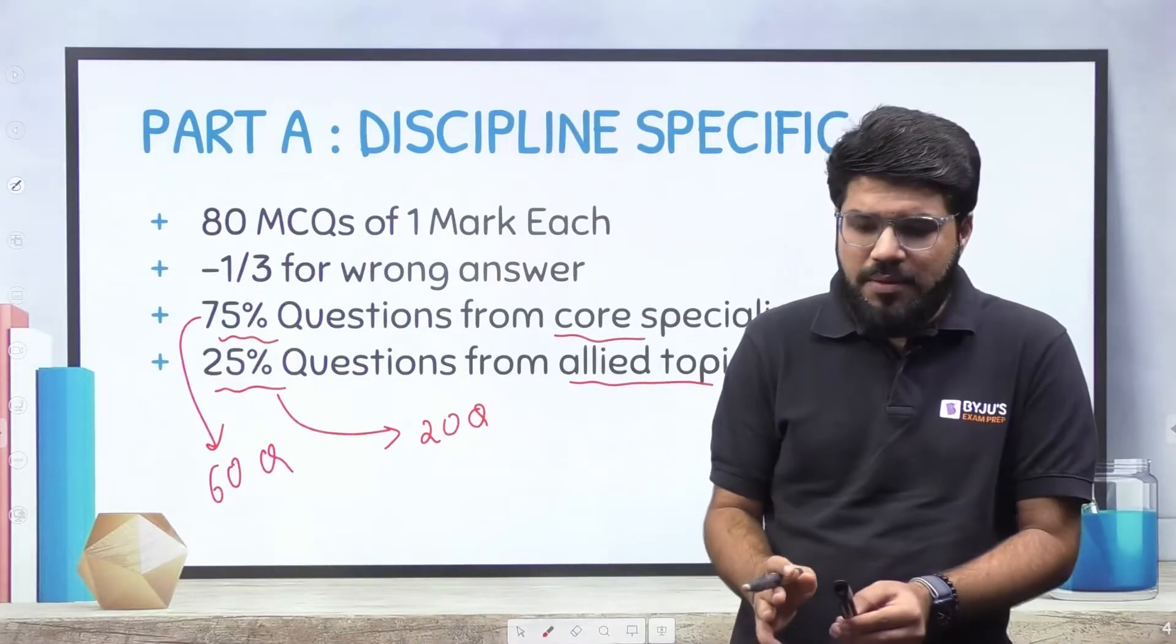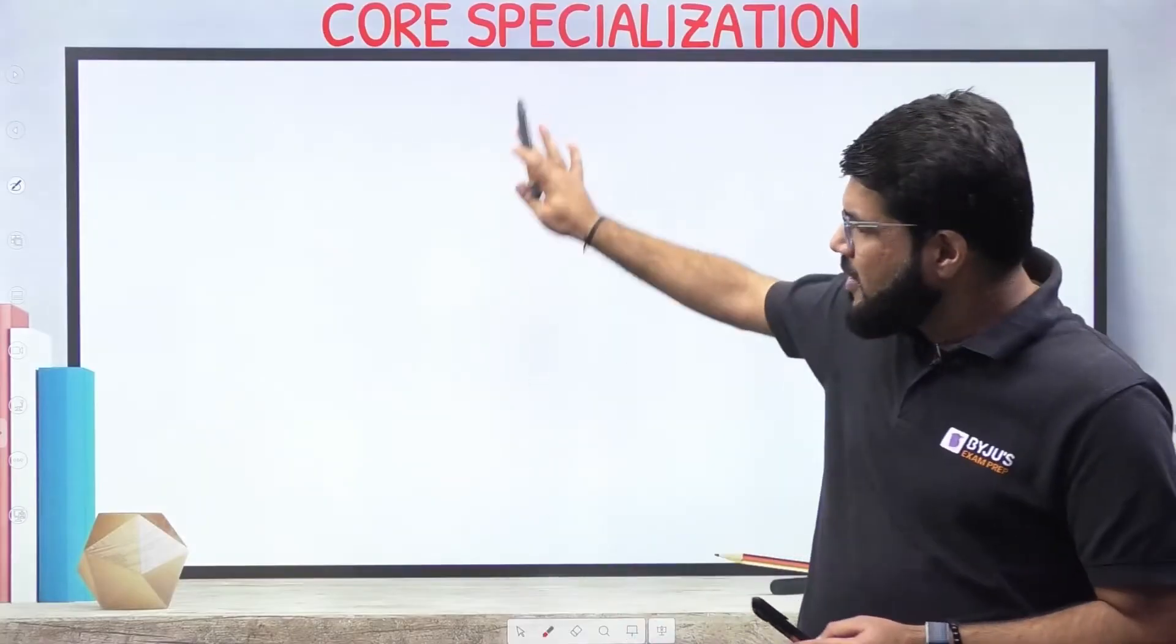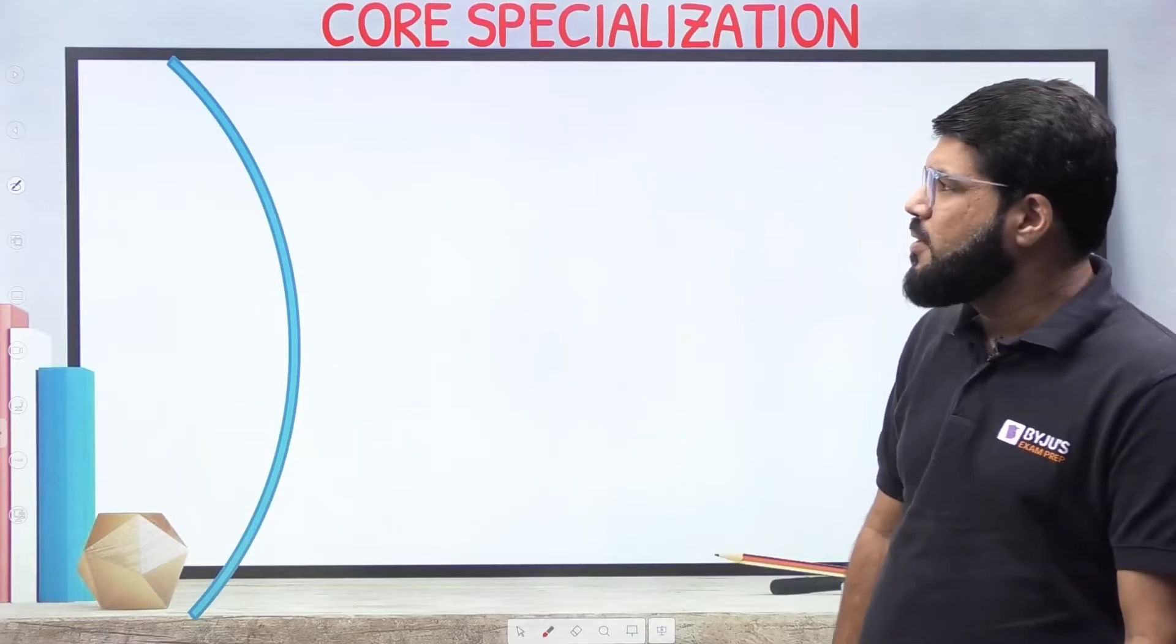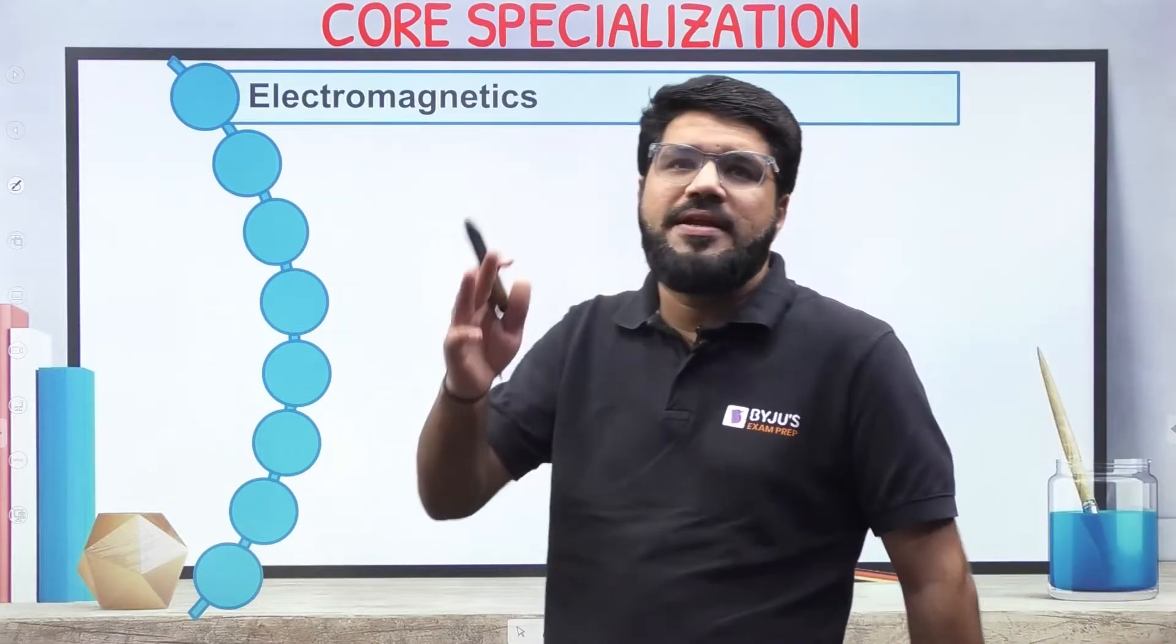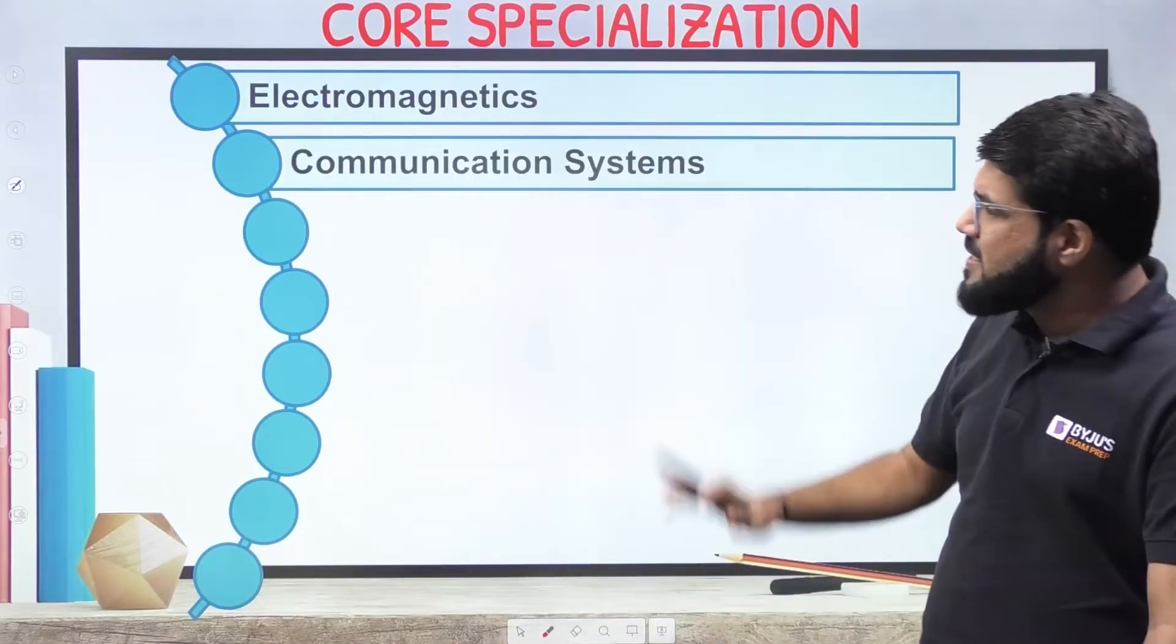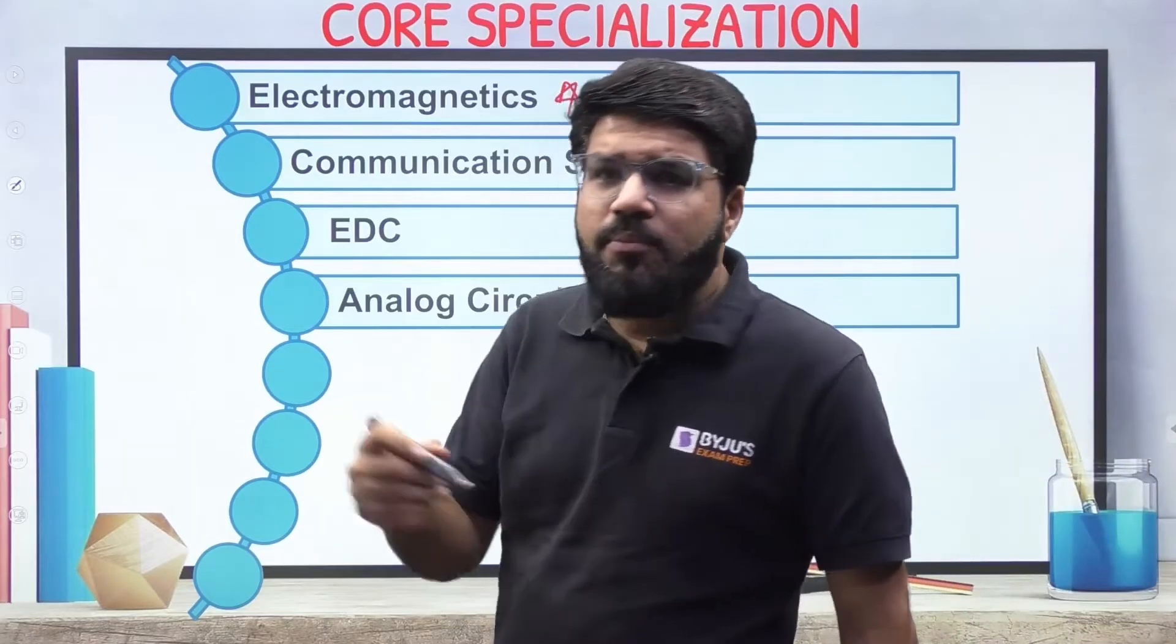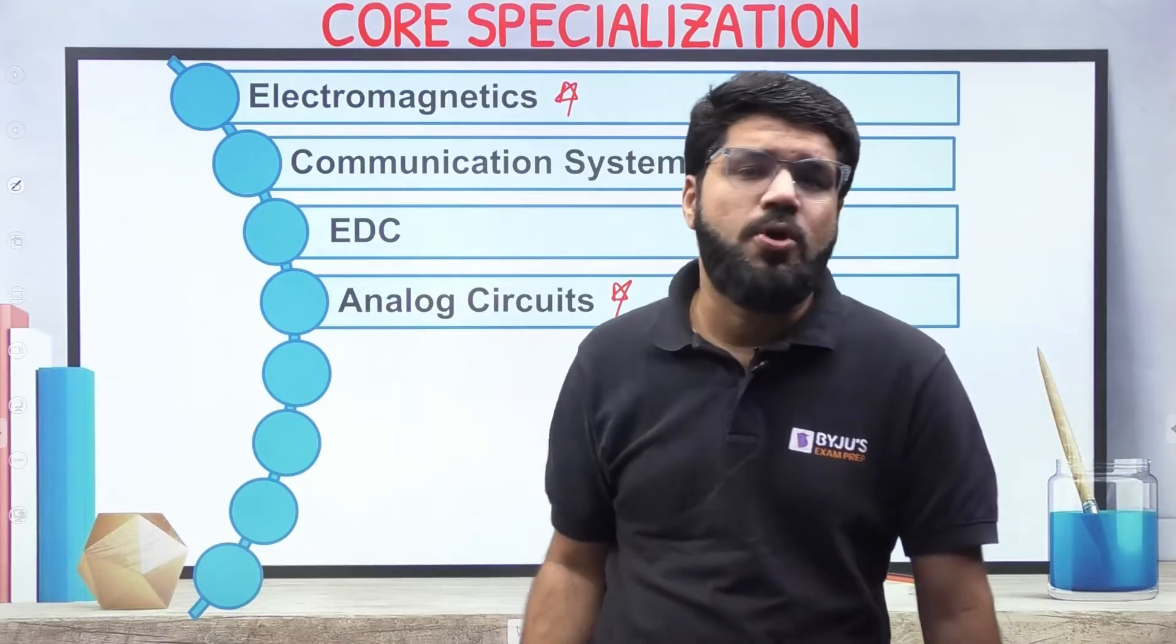What are those areas? Now when I want to talk about the core specialization, you can mostly call it the subjects that are there with GATE as well. There comes the important slide. The core specializations will be just like what is your basic GATE syllabus. Number one, Electromagnetics. Why do I place it at number one? Because probably the technical subject which produces the most number of questions in ISRO. Communication systems, EDC, Analog.